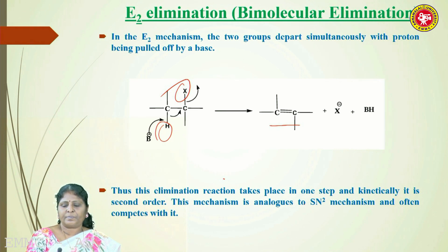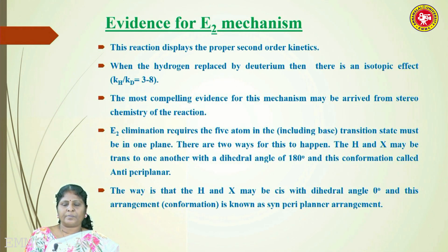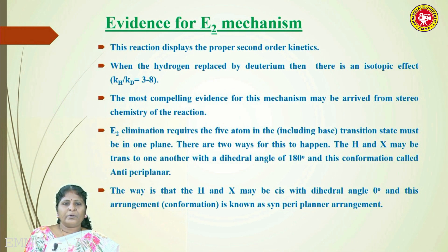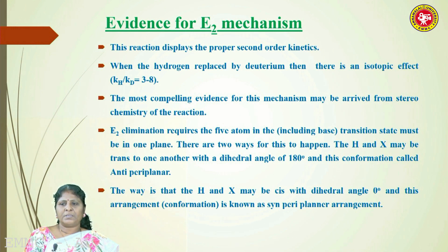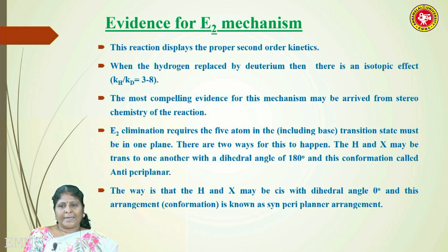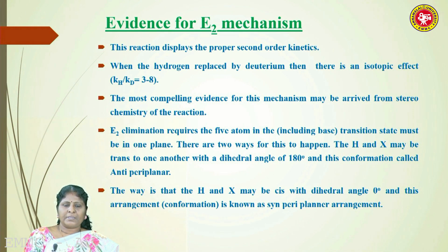This mechanism is analogous to the SN2 mechanism — substitution nucleophilic bimolecular — and often competes with it. Evidence for the E2 mechanism: the reaction displays proper second-order kinetics since it proceeds in a single step. It also shows a significant kinetic isotope effect, with a kH/kD value greater than 1, amounting to 3 to 8 for bimolecular mechanism. The most compelling evidence comes from the stereoelectronic factor — the stereochemistry of the reaction. E2 elimination requires five atoms to lie in a single plane.